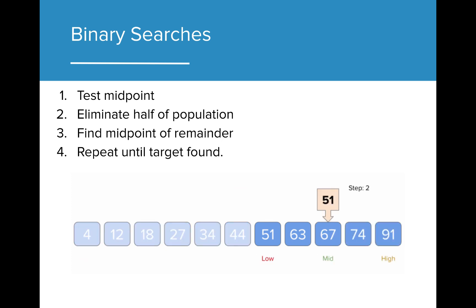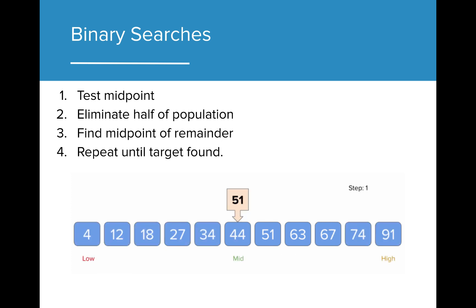A linear search of 10,000 records could have a worst-case scenario of 10,000 comparisons. With binary search, our worst case is only 15 comparisons to find our value.